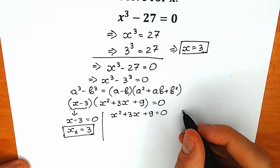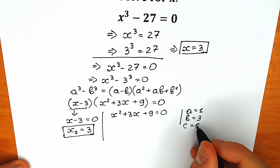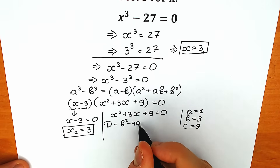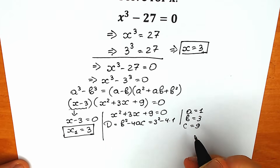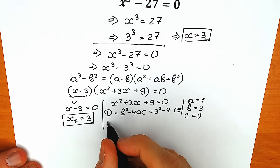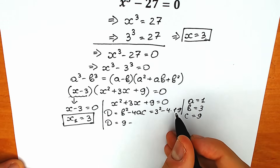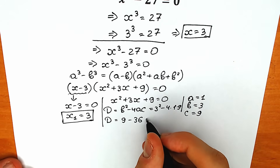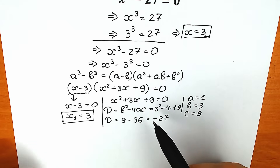Let's find the discriminant with coefficients a equal to 1, b equal to 3, c equal to 9. The discriminant is b² minus 4ac, which equals 3² minus 4 times 1 times 9 — that's 9 minus 36 — so our discriminant equals minus 27. Both roots will be complex because we have a negative discriminant.